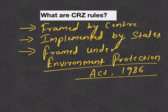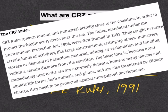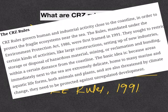With powers granted under this act, the central government framed these rules for the first time in 1991. The basic objective of these rules is to govern human and industrial activity close to the coastline, in order to protect the fragile ecosystems near the sea. These rules seek to restrict certain kinds of activities like construction, setting up of new industries, storage or disposal of hazardous materials, and mining within a certain distance from the coastline.